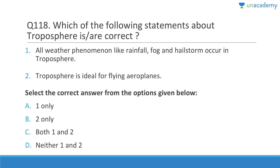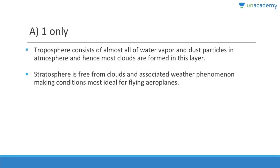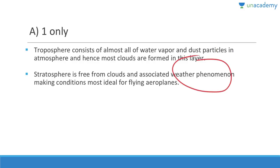Question 118: All weather phenomena — rainfall, fog, hailstorms — occur in the troposphere. However, aeroplanes do not fly in the troposphere; they fly above it, approximately at the junction of the troposphere and stratosphere (roughly 10 km altitude). The stratosphere is free from clouds, making conditions ideal for flying. Answer is one only.